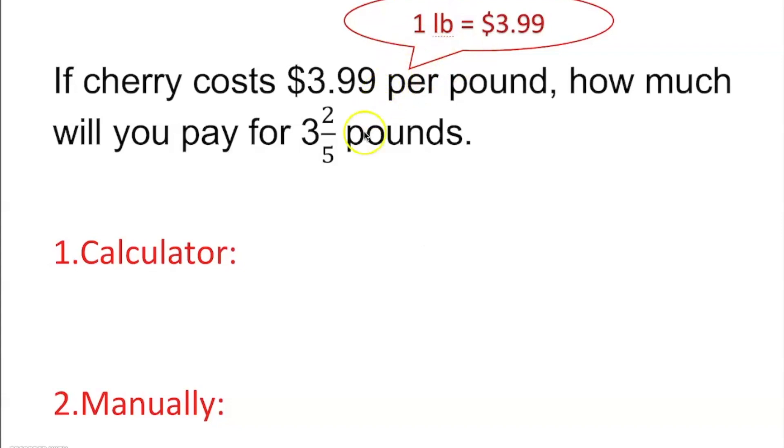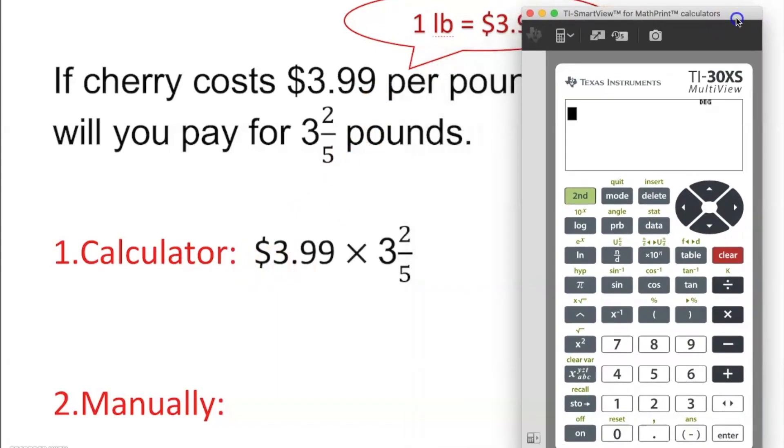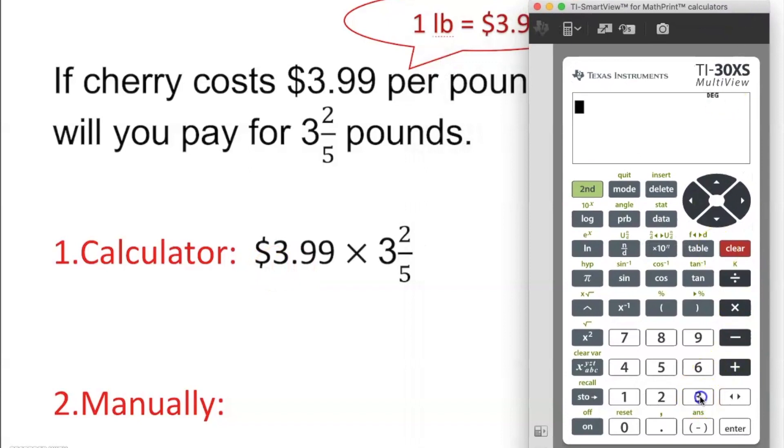Any calculator is going to work. If we multiply, we can get this calculator here. So, 3.99 times 3, second n over d, 2 over 5, and you go to the right side, enter.